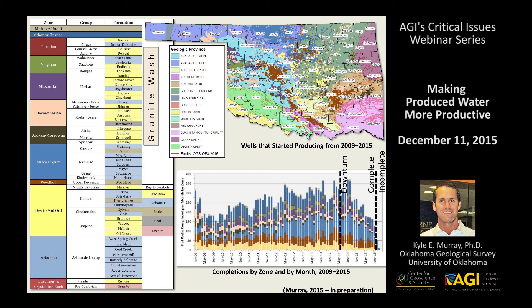The Arbuckle predominantly is our disposal zone. Most of my slides will focus on those four zones and show you the trends we see in oil and gas production, water production, and water management. These color codes are hopefully helpful. I have ten zones that I typically organize the data into, with two miscellaneous categories that allow for younger zones or zones that are co-mingled together to be multiple and undifferentiated.